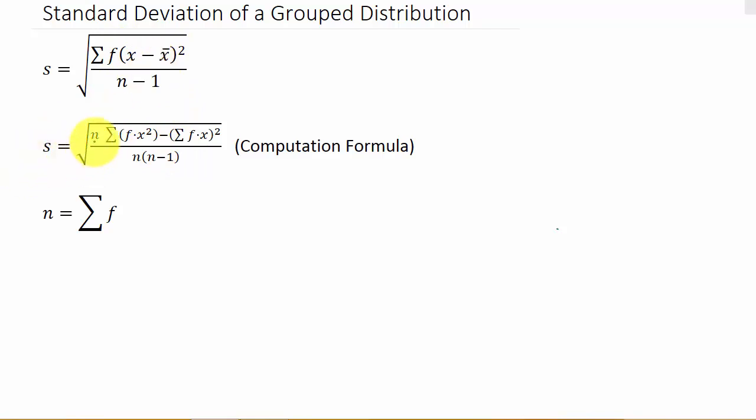So the standard deviation is n times the sum of f times x squared minus the sum of f times x and then all of that squared over n times n minus 1. And n is the sum of the f values. Now in some of the books, this computational formula, it may look different than this one. I've seen different formulas in different books, but they will all give you the same result.